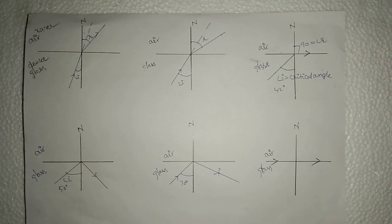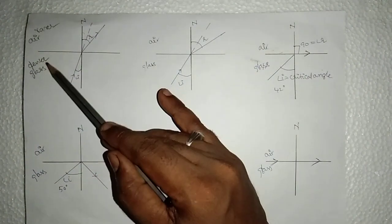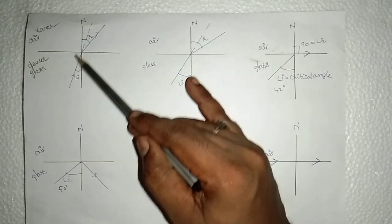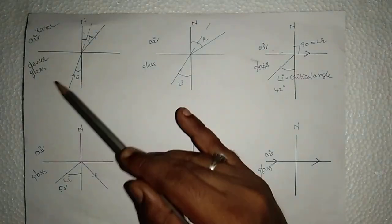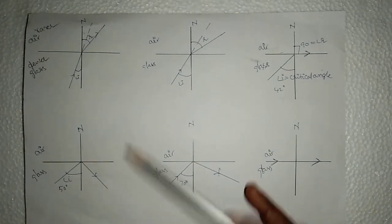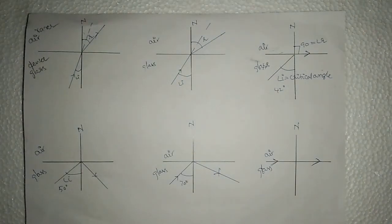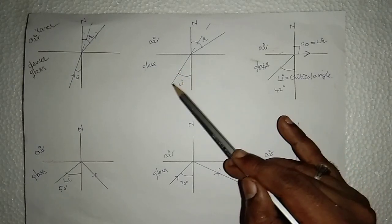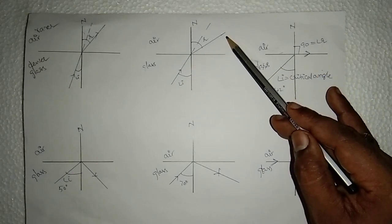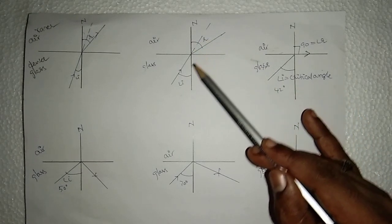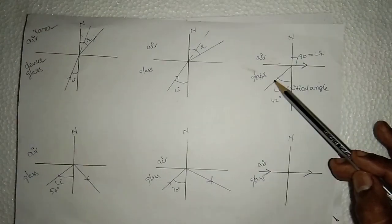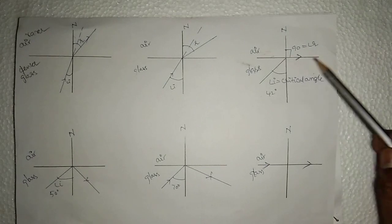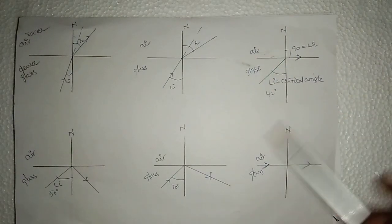From the table, if you draw the graphs, here the light ray is traveling from glass to air — that is from denser to rarer — at a particular angle of incidence of approximately 10 degrees. The estimated light ray should come outside in a straight line, but it is deviated away from the normal. Light traveling from denser to rarer bends away from the normal, whereas rarer to denser bends towards the normal. This was already proved in the case of Snell's law. As the angle increases, the angle of refraction increases.